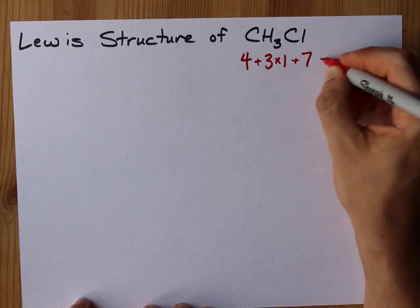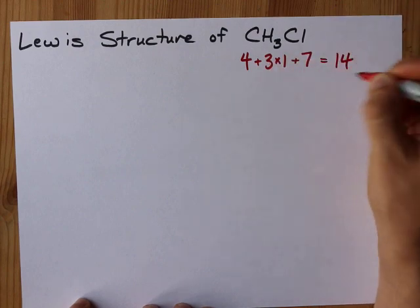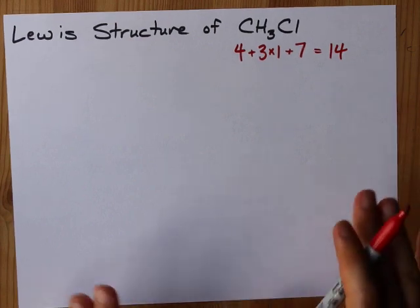Four and seven make 11, plus three is 14 electrons that I'm dealing with to start with here, okay?